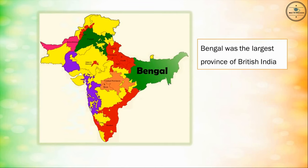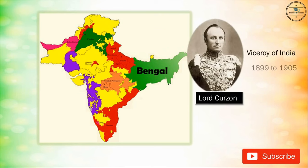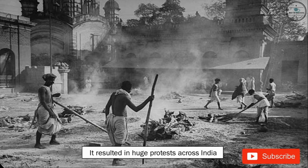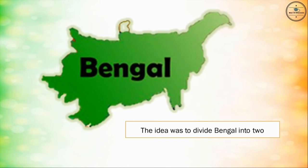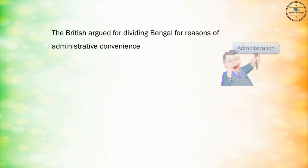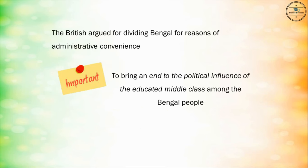Bengal was the largest province of British India; it included Bihar and parts of Orissa. Lord Curzon was the Viceroy of India from 1899 to 1905. In 1905, he announced the partition of Bengal, which resulted in huge protests across India. The idea was to divide Bengal into two parts: Bengal and Eastern Bengal. The British argued for dividing Bengal for reasons of administrative convenience. Another important reason was to bring an end to the political influence of the educated middle class among the Bengal people.